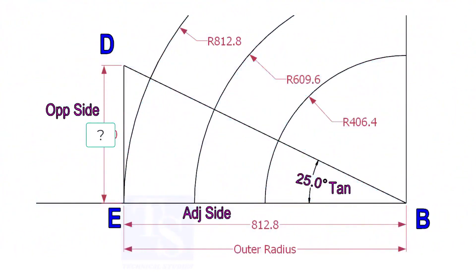Mark a line 25-degree rotated from the base line AB. To draw the line DB, we need to know the length of the line ED.